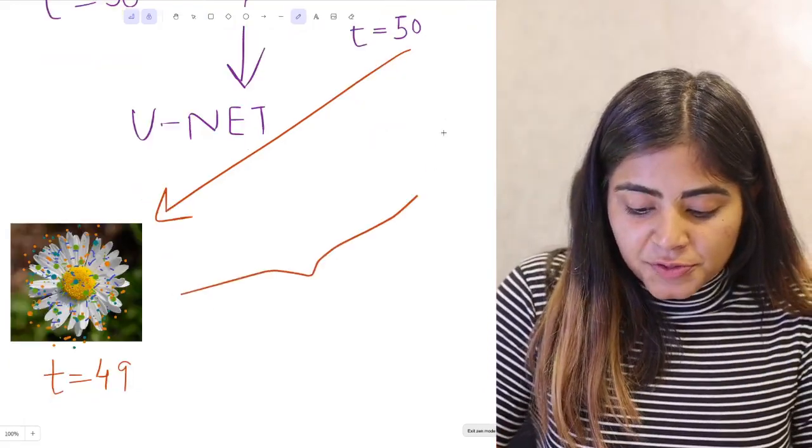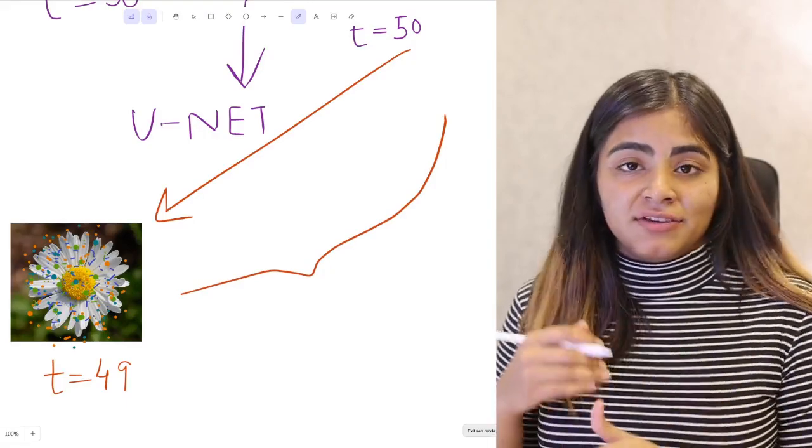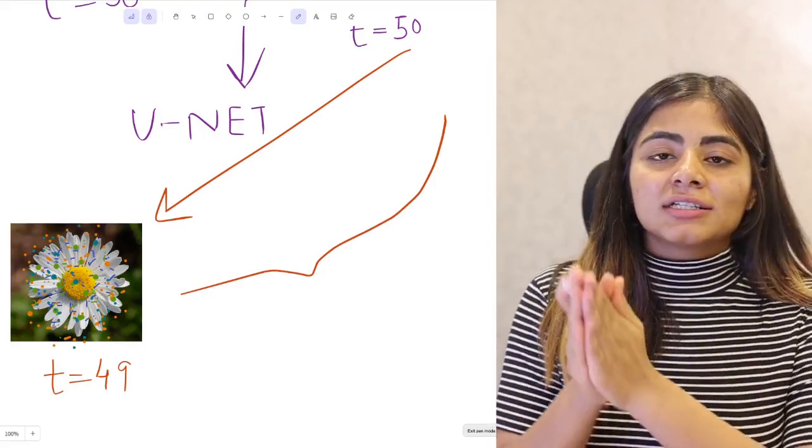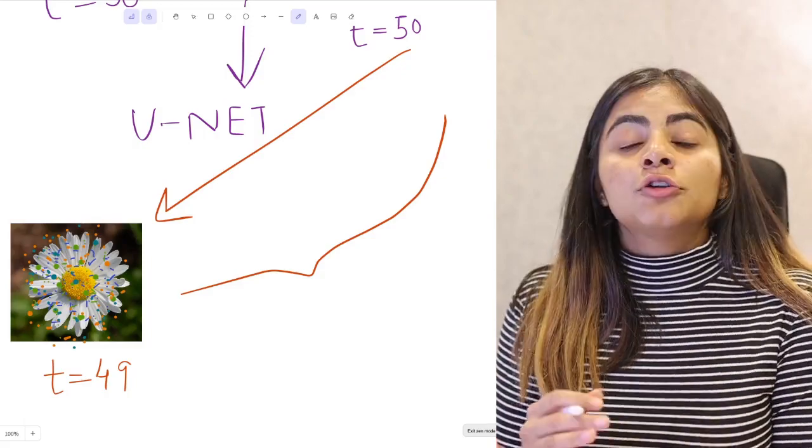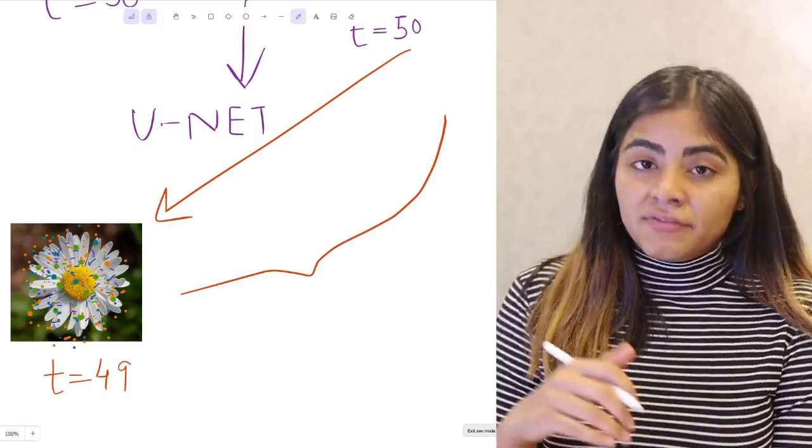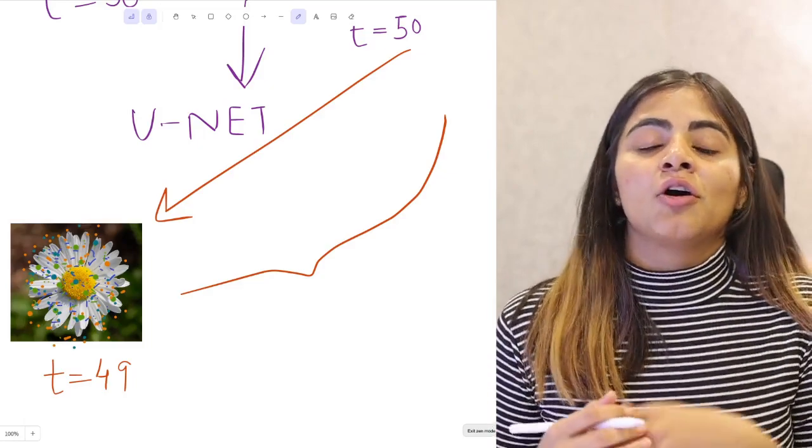Now we are going to loop through this process, and every time on every loop we are going to get one step closer to our original image. This will help to train our model to calculate the gradients of our previous distribution and return to our original image.